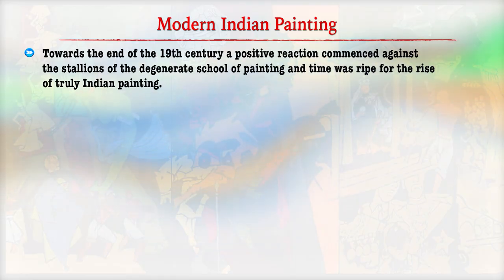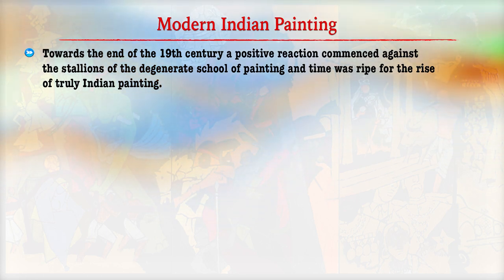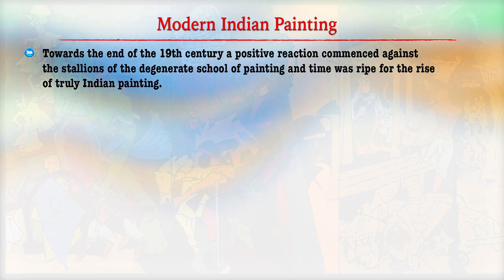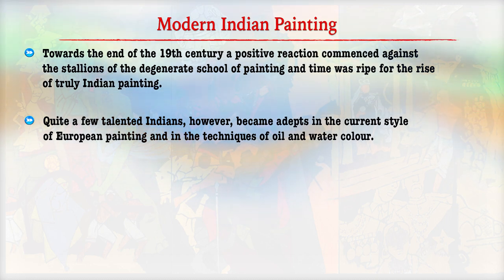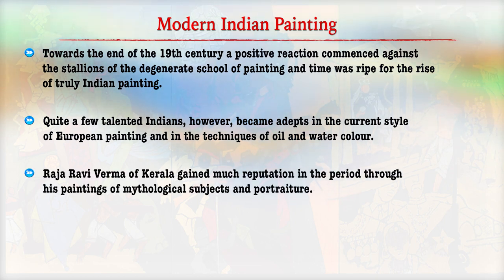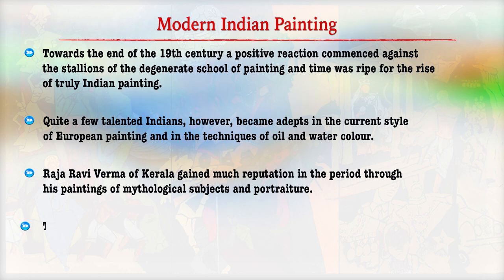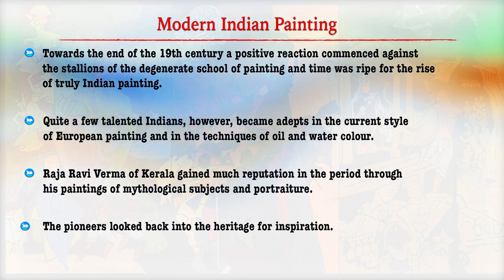Towards the end of the 19th century, a positive reaction commenced against the declining school of painting, and the time was ripe for the rise of indigenous Indian painting. Quite a few talented Indians had adapted the European style of painting and used the techniques of oil and watercolour. Raja Ravi Varma of Kerala gained much reputation in this period through his paintings of mythological subjects. The pioneers looked back into the heritage for inspiration.